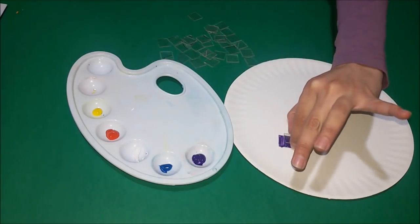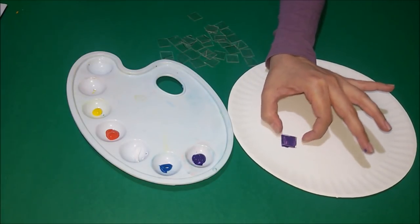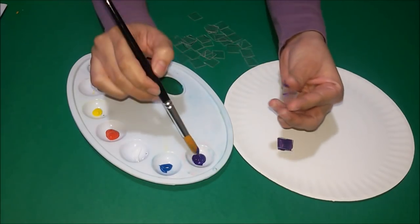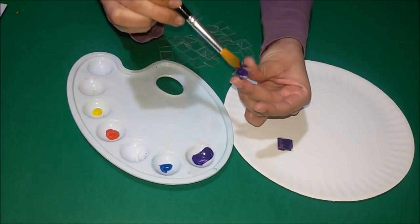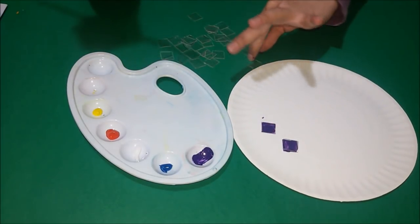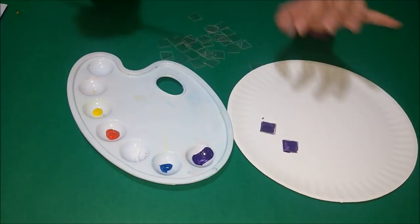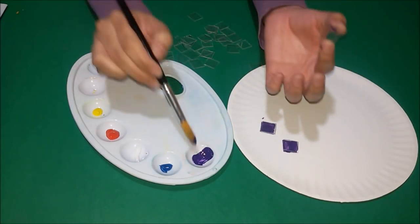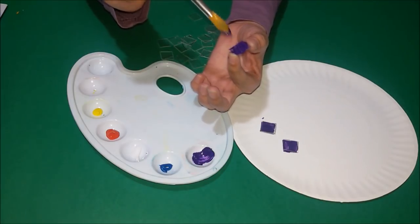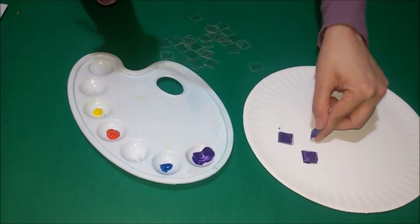Then we put another little square above. We do another one. We put another little square above. Yeah, so and so and so. We do the same with the rest of the mosaics.